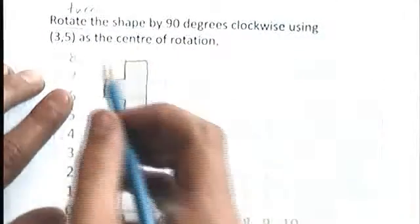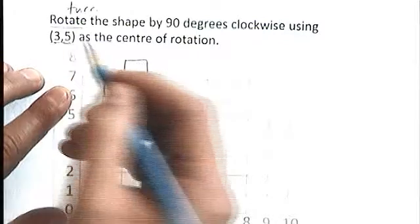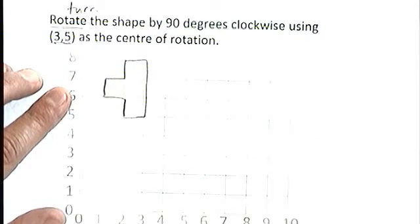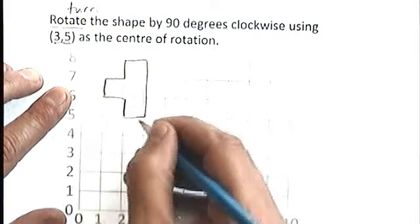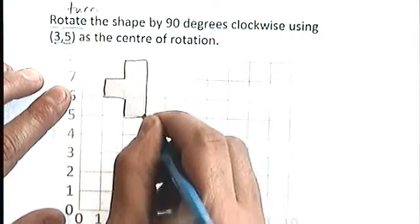Then what you need to do is find this point here, this center of rotation. This is like going to be your axle of your wheel. This is the point around which the shape is going to turn. (3,5), here it is, and it's actually one corner of the shape.